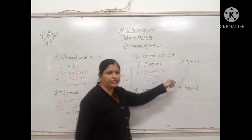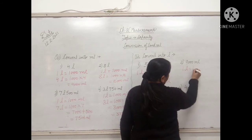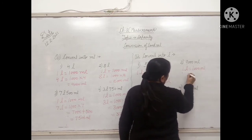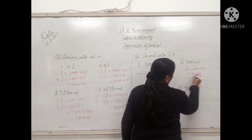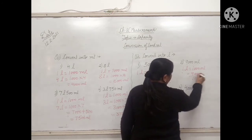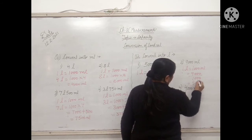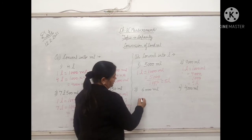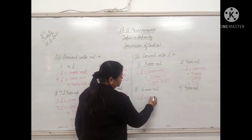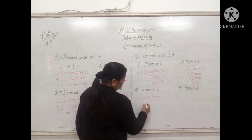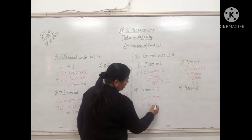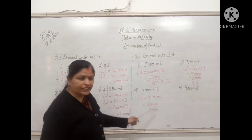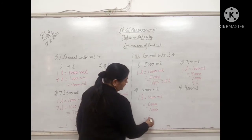Next one: 9000 milliliter. Again 1 liter equals 1000 milliliter. So 9000 upon 1000. We will cut the zeros and the answer will be 9 liter. Next one: 6000 milliliter. 1 liter equals 1000 milliliter. So 6000 upon 1000. Cut all the zeros and the answer will be 6 liter.